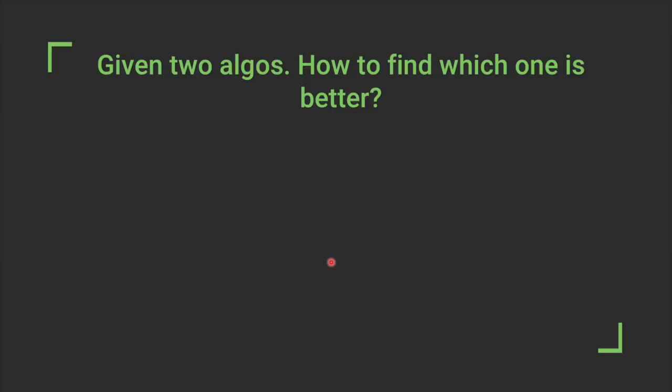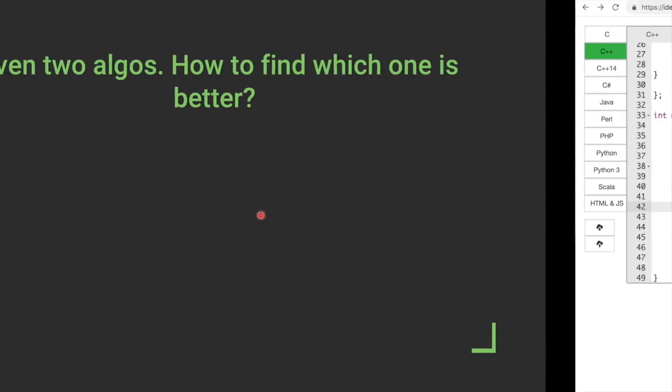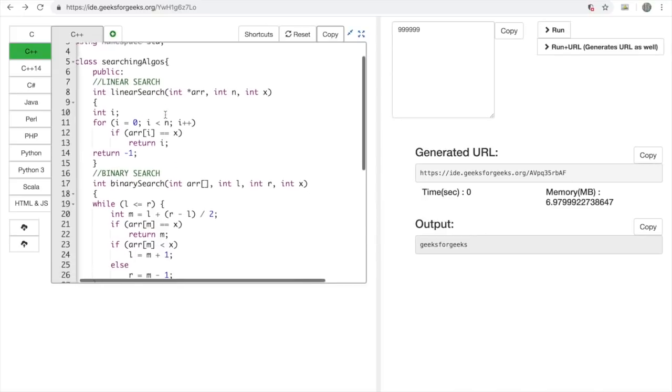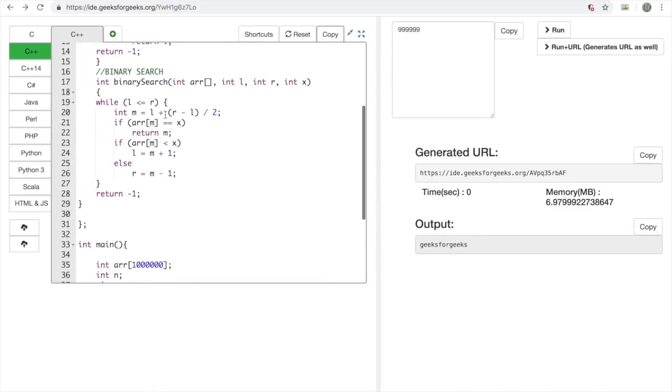A very naive way is we can directly record the execution time. Let's see how it's done. I have made a class which contains two methods, one for linear search and the other for binary search.